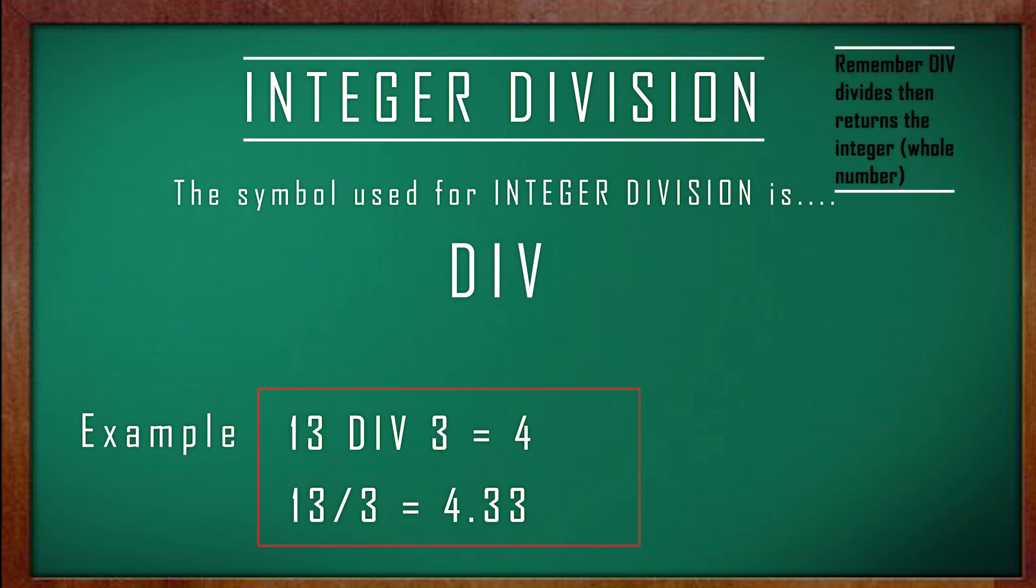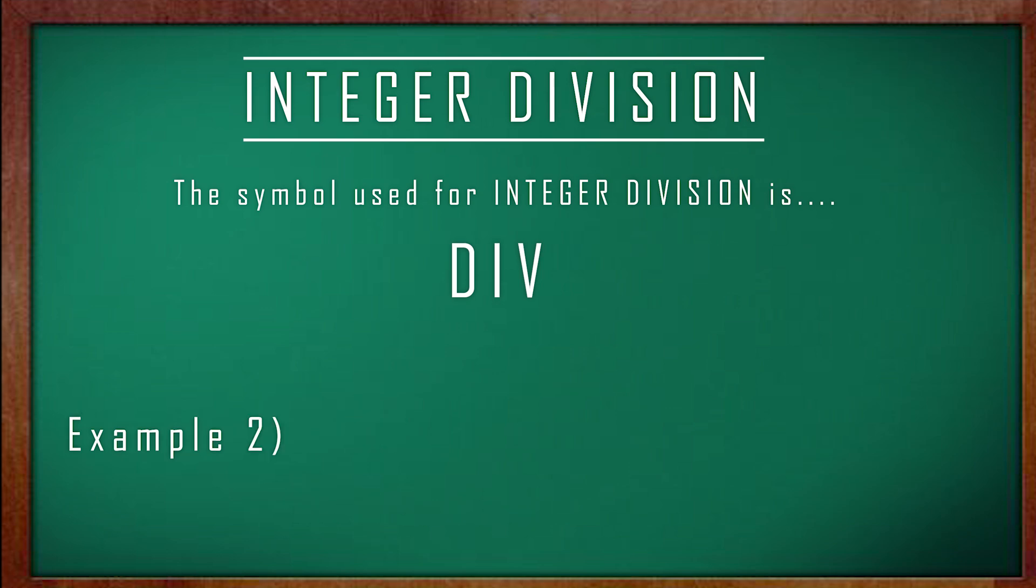For example, 13 DIV 3 is equal to 4. That's because 13 divided by 3 is 4.33 recurring. So the answer only returns the number 4, as that is our integer, our whole number. Keep in mind that it does not round up or down. All it does is return the integer value.